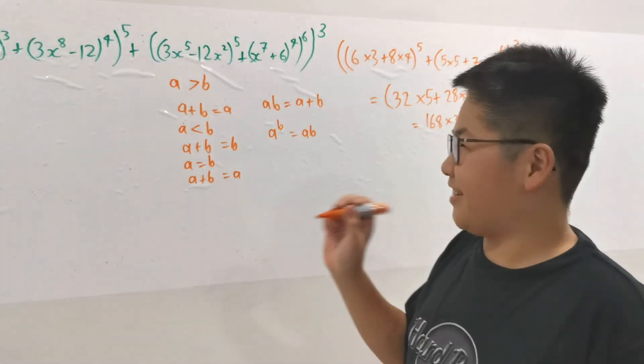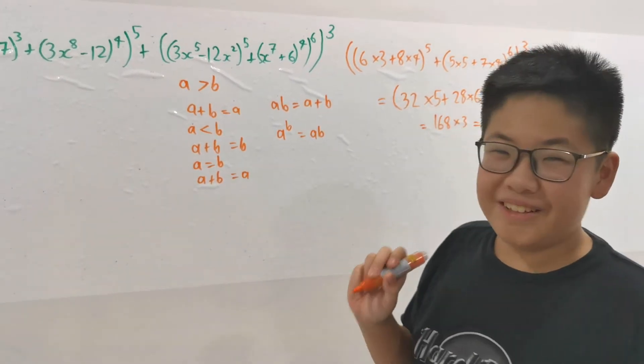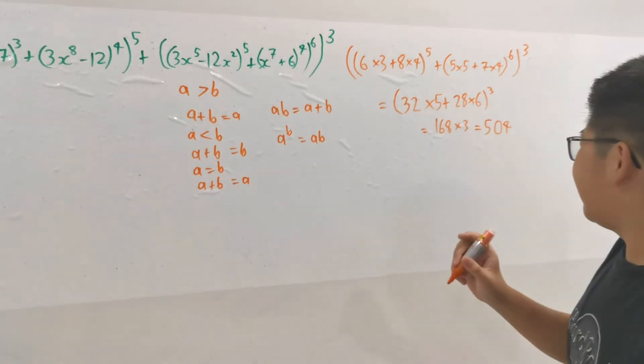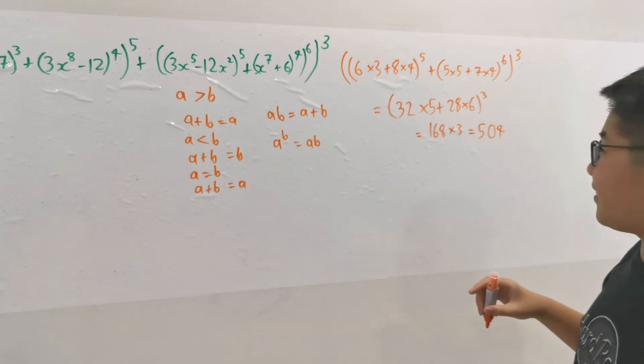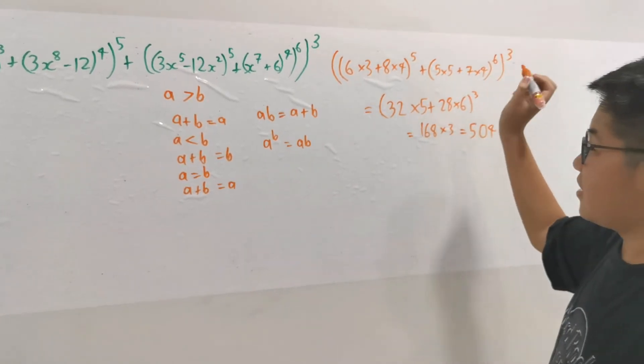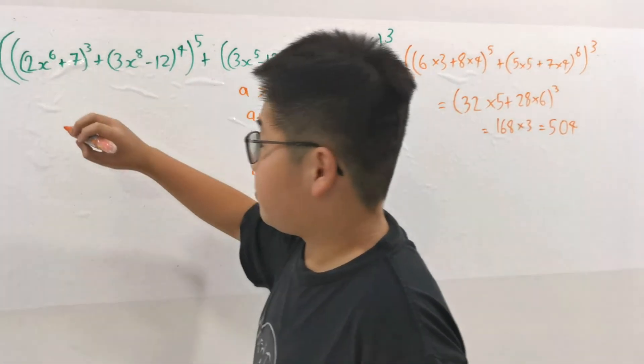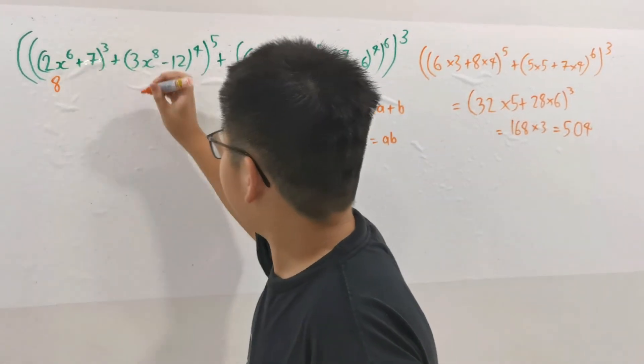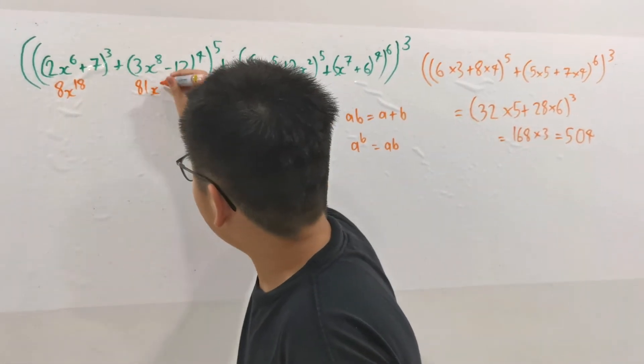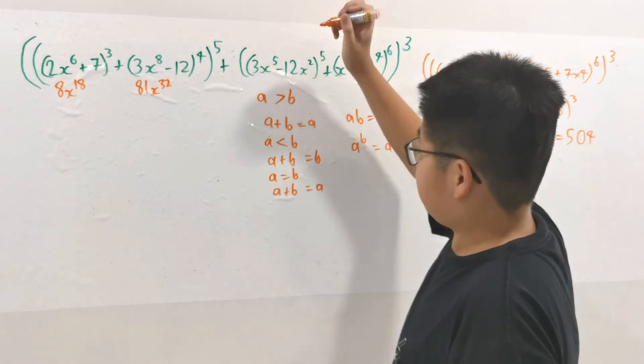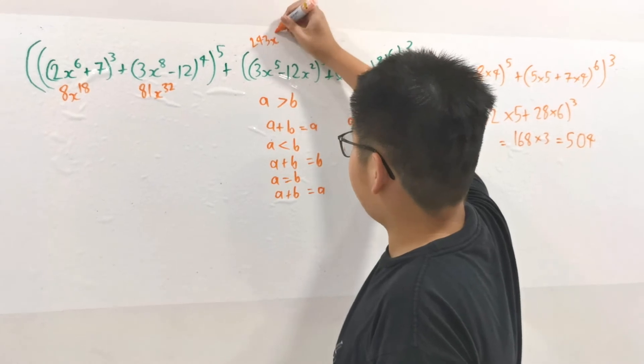Now let's calculate the highest term of this polynomial. We've seen this has the highest degree. So 2^3 = 8, 3^4 = 81. Then we have x^18, x^32, and (3x^5)^5 = 243x^25.